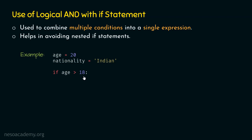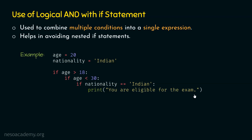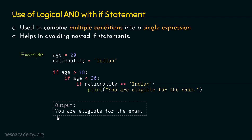We need nested if structure for this purpose. So we type: if age is less than 30. This is nested if structure. If both of these conditions are satisfied, then only we would be able to proceed. After this, we want to check if nationality is Indian. Then we must print: you are eligible for the exam. When all these conditions are satisfied, this message will be printed. We know that age is 20 and nationality is Indian, therefore all conditions are satisfied. Hence, the output is: you are eligible for the exam.